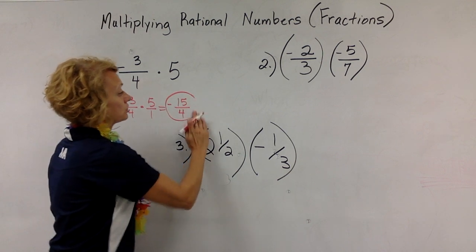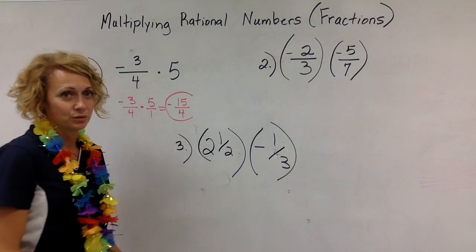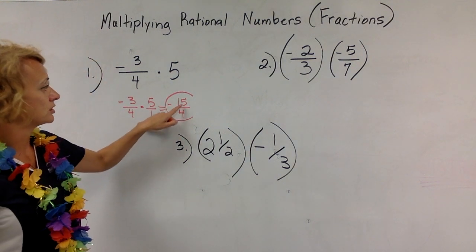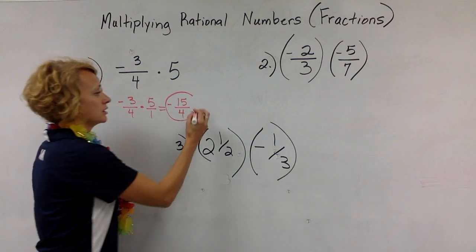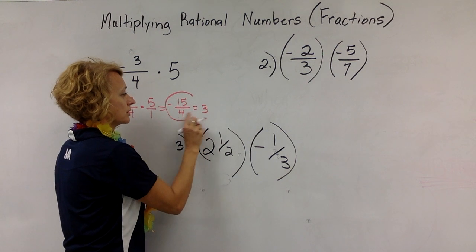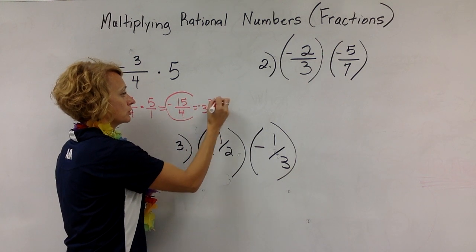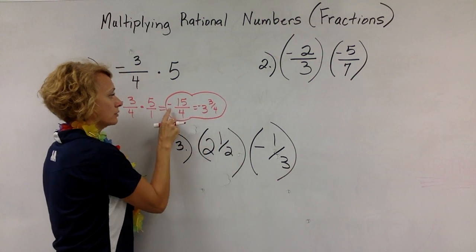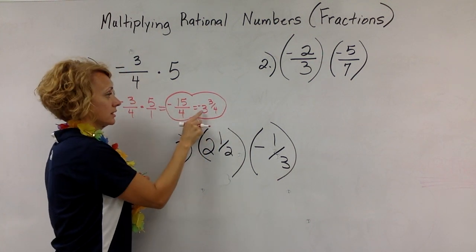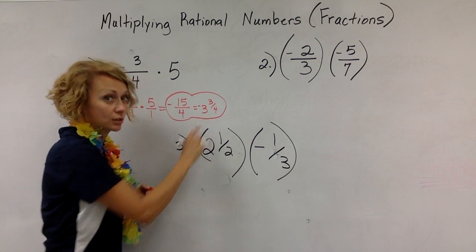If I wanted to change it to a mixed number, remember that I would do division. 4 goes into 15 how many times? It goes 3 times because 4 times 3 is 12, and how many are left over? 3. Make sure and bring that sign over—if this is a negative, then the equivalent mixed number is also negative.